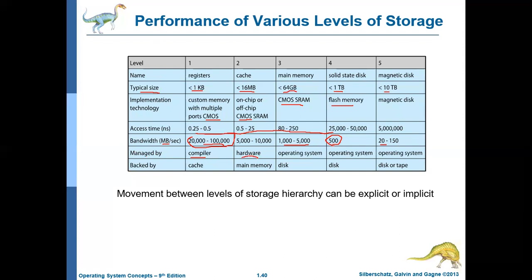Registers are controlled by the compiler, cache memory is controlled by the hardware, main memory is controlled by the operating system, and solid state disks and magnetic disks are also managed by the operating system. The contents of registers are backed up in cache memory, cache memory contents are backed up in main memory, and main memory contents are captured in disk — solid state disk backed up in magnetic disk, and magnetic disk backed up in tape.